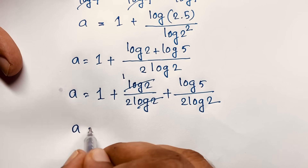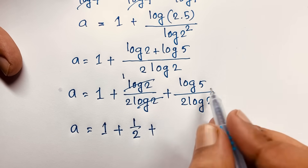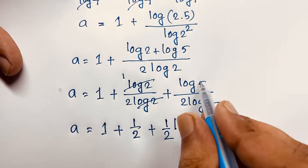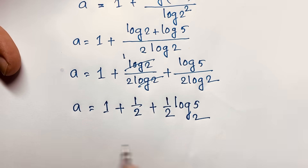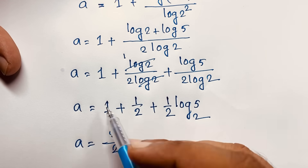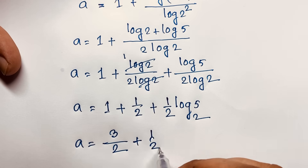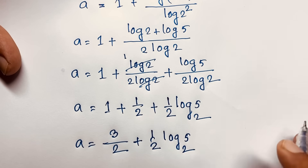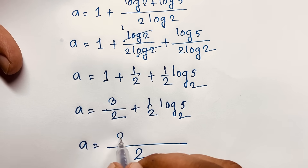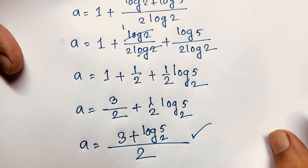So a equals 1 plus 1 over 2 plus (1/2) log₂5, using the change-of-base formula. Now 1 plus one-half equals 3 over 2, and combining with a common denominator of 2, the final answer is a equals (3 plus log₂5) over 2.